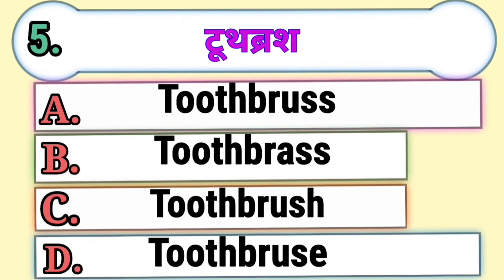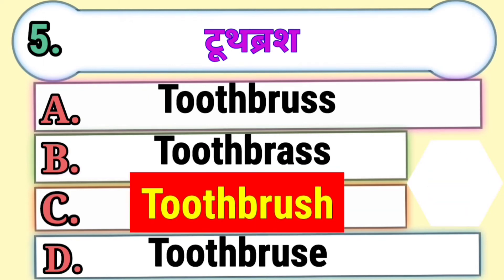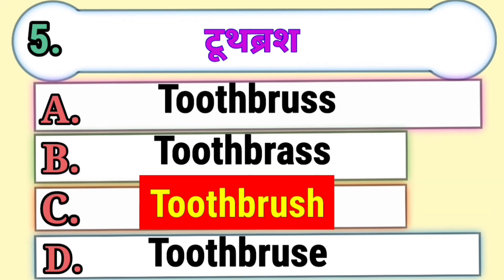Question 5. Toothbrush. Which of the following is the correct spelling of toothbrush? Option A, Option B, Option C, or Option D. The correct answer is Option C, Toothbrush.